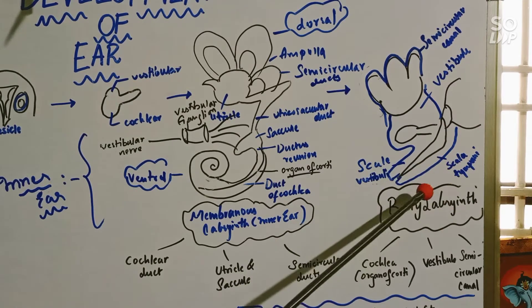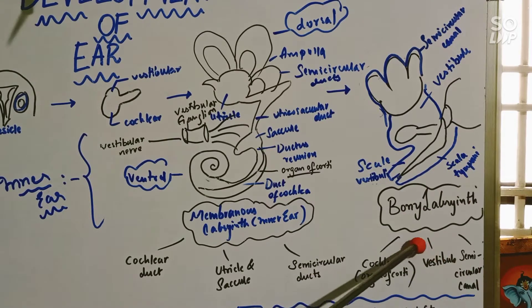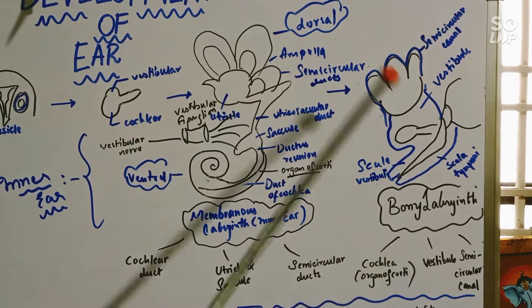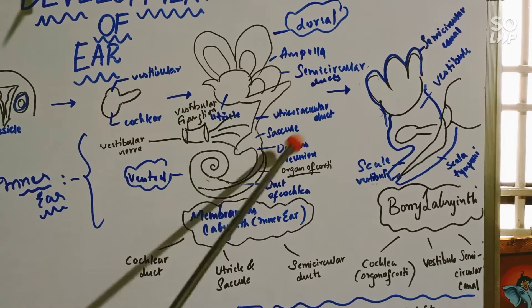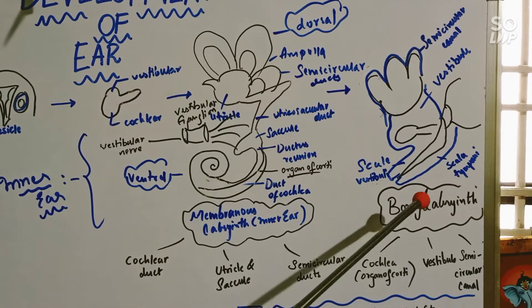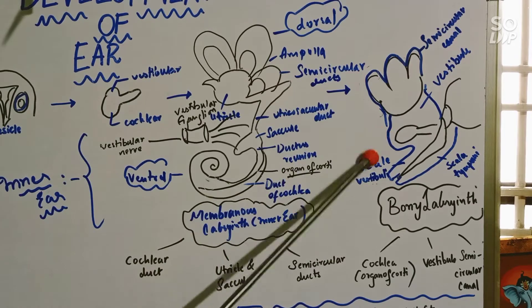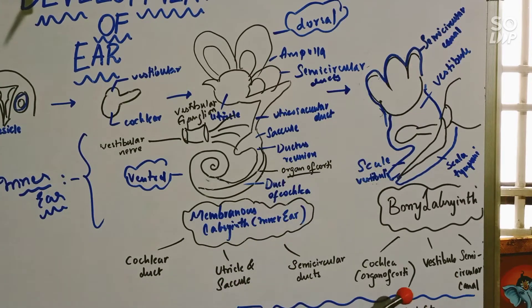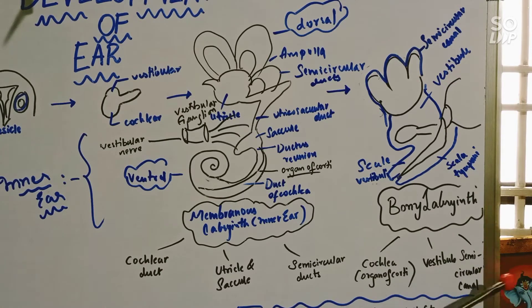Next we will see the bony labyrinth. The bony labyrinth is also a part of the inner ear, but it is surrounding the membranous labyrinth. Here you can see it surrounding the membranous labyrinth. It contains three parts: the cochlea, organ of Corti, and the vestibule and the semicircular ducts.